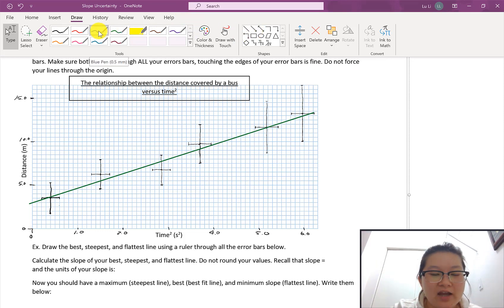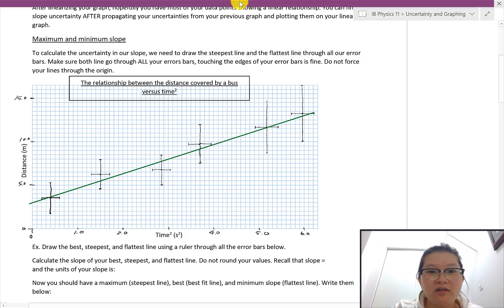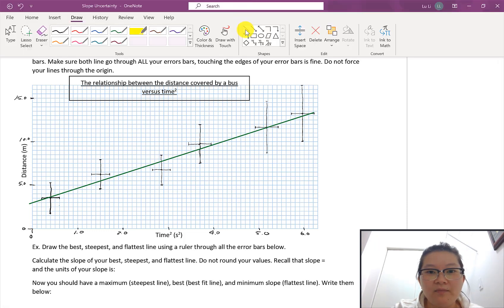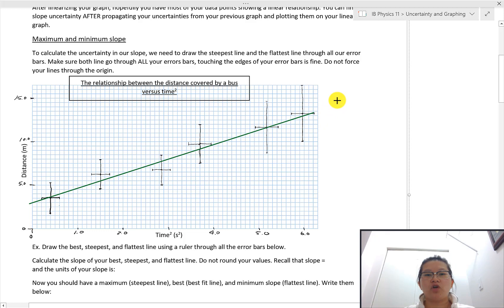Now, the next line that I'm going to draw, and you're going to do this with a ruler. I get to do it on a computer, which I have a little bit of advantage, is the next line that I'm going to draw is I'm going to try to draw the steepest line that I can make based off of the error bars that I have in my data points.